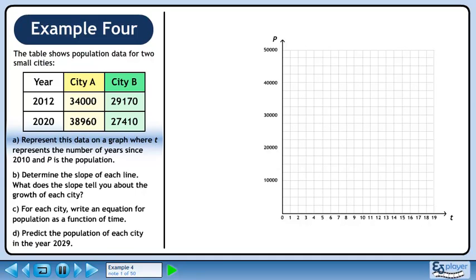The table shows population data for two small cities. Represent this data on a graph where t represents the number of years since 2010 and p is the population.